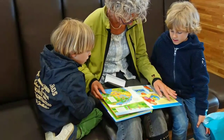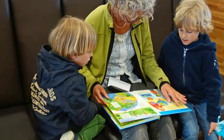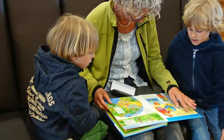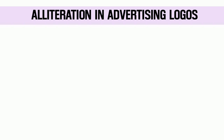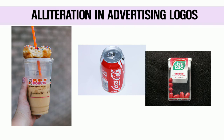Yeh picture ko ek flavor dal kar use aur beautiful bana deta hai — that's why we use all types of figures of speech. Iske alawa bahut saare advertisement karne wale logos bhi use karte hain, jaise Dunkin Donuts — dono baar 'D' aaya. Coca Cola, Tic Tac, Blackberry — yeh companies apne naam mein alliteration ka use karti hain taaki log aasani se yaad kar sakein.